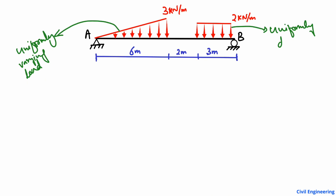The uniformly distributed load does not change in its magnitude. We have to analyze this beam by finding out the support reactions. I will start with a very easy and simple way. First, we have to find out the area of each load in order to convert it into a point load.